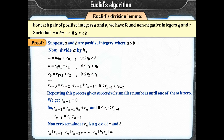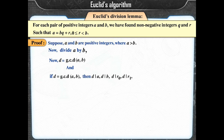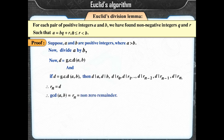Rn divides Rn−1, Rn divides Rn−2, and so on: Rn divides B, and Rn divides A. Where D = GCD(A, B), D divides A, D divides B, D divides R0, R1, ..., Rn−2, Rn−1, and D divides Rn. Therefore Rn = D, so GCD(A, B) = Rn = the last non-zero remainder.